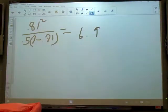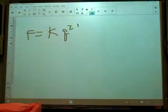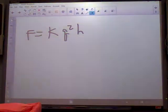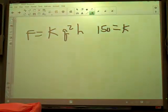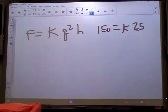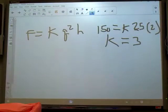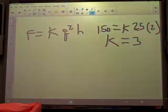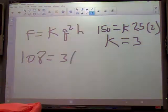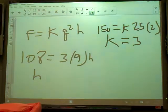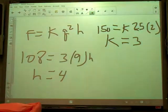19, f varies jointly as q squared and h. And it gives you some stuff to plug in. f is 150 when q is 5, can I go ahead and write 25, 5 squared, and h is 2. 25 times 2 is 50. 150 divided by 50 gets you a k of 3. Now, find h when f is 108. 108 equals k times q is 3. 3 squared is 9. It's 27. 108 divided by 27 should get you 4.